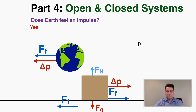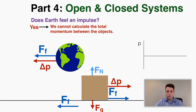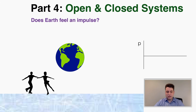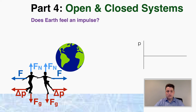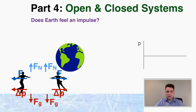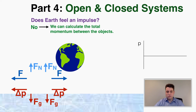So again, we can't calculate the total momentum because the earth just has way too much momentum to start. One last example: two ice skaters pushing apart from each other. The force of gravity and normal force are balanced out, and the only two objects in this problem — the two ice skaters — are only putting forces on each other. So they're the two objects experiencing the impulse, not the earth, and we could use conservation of momentum to solve that problem.